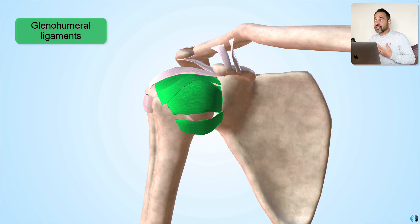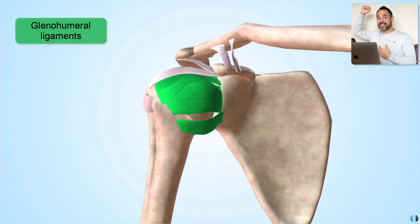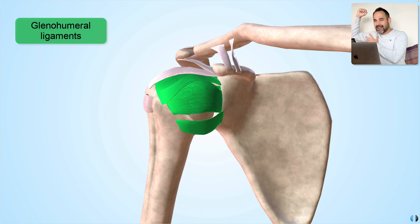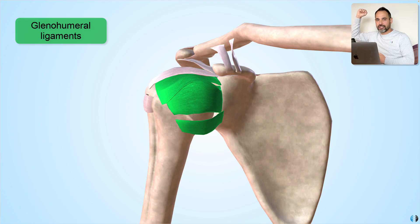The time that we're going to experience anterior dislocations most commonly is that position of combined abduction and external rotation. So listen out for this position or this mechanism of injury when your patient describes that they've had a shoulder dislocation.